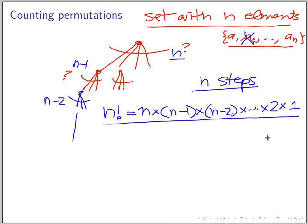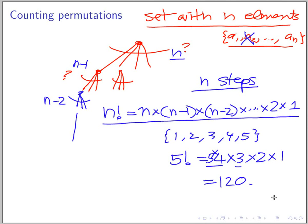Okay, so if you have a set with five elements, say you have 1, 2, 3, 4, 5, the number of permutations of this set is 5 factorial, which is 5 times 4 times 3 times 2 times 1, and this is 120, for example.